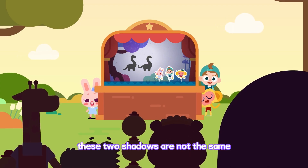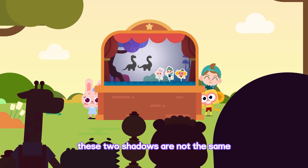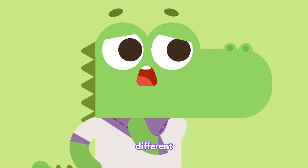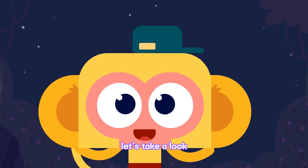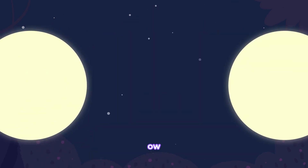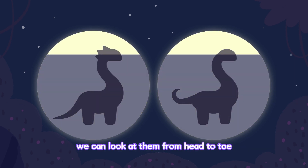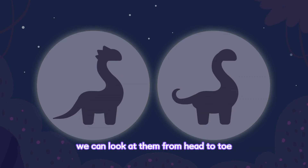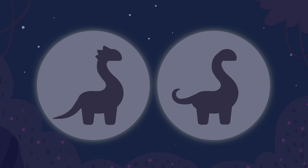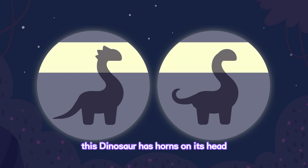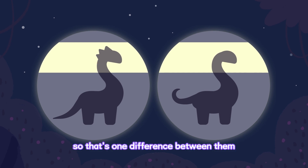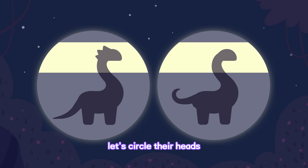That's not correct! These two shadows are not the same! How are they different? Let's take a look. What's the difference between these two shadows? We can look at them from head to toe. This dinosaur has horns on its head, but the other dinosaur does not. So that's one difference between them. Let's circle their heads.